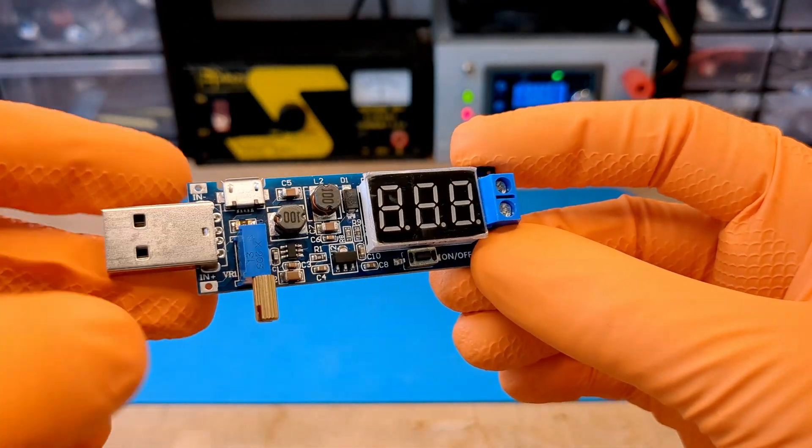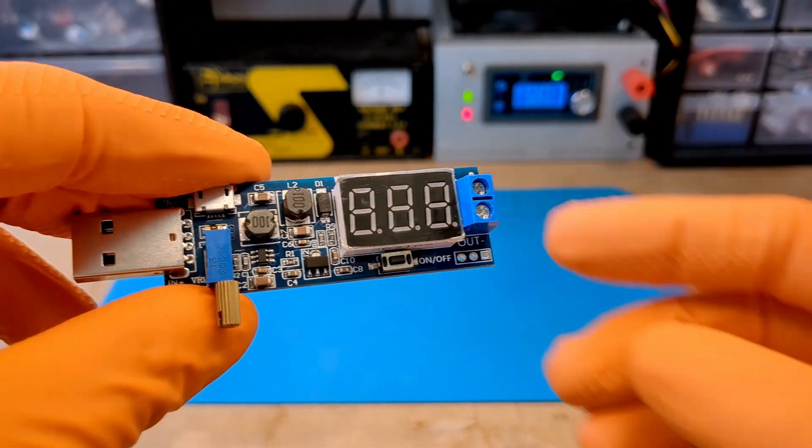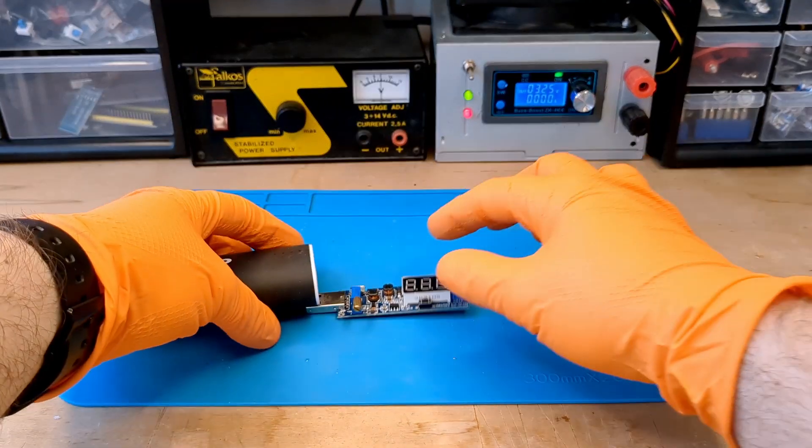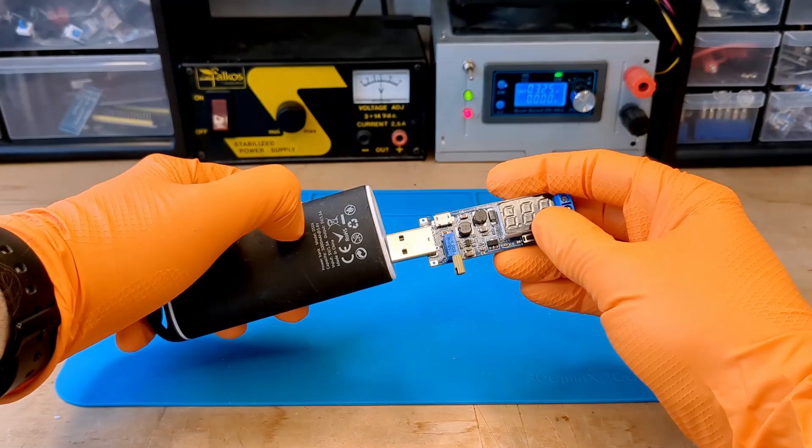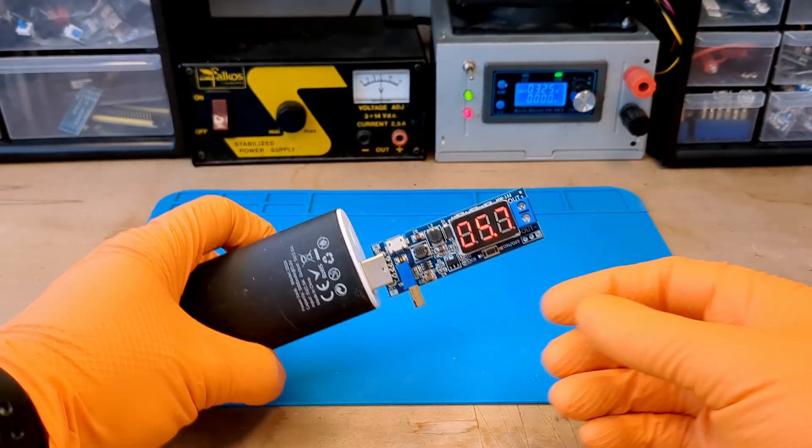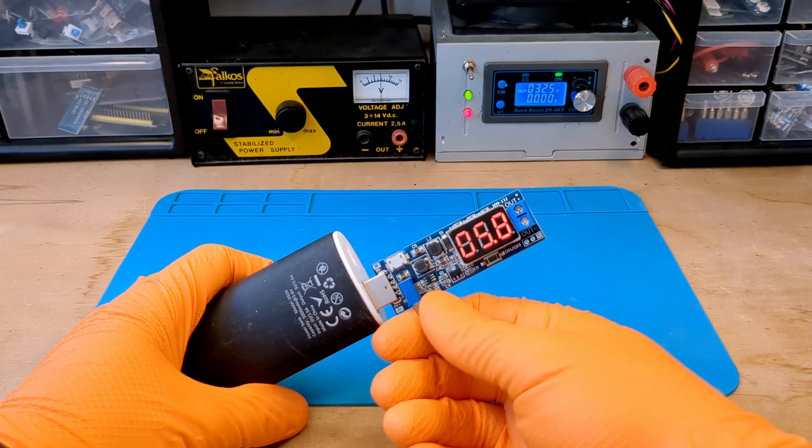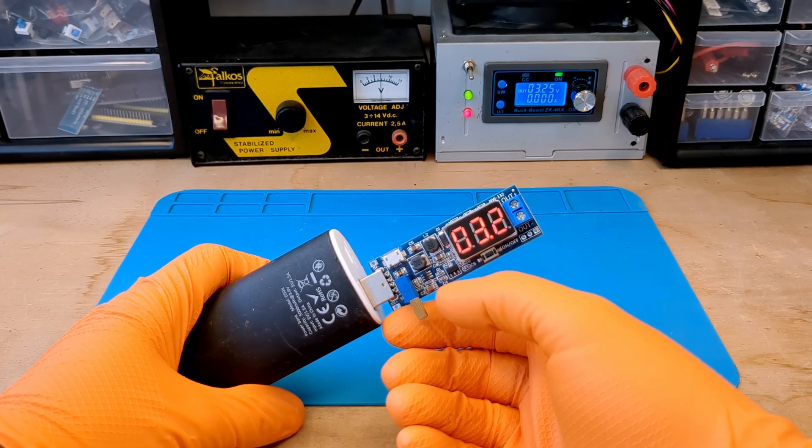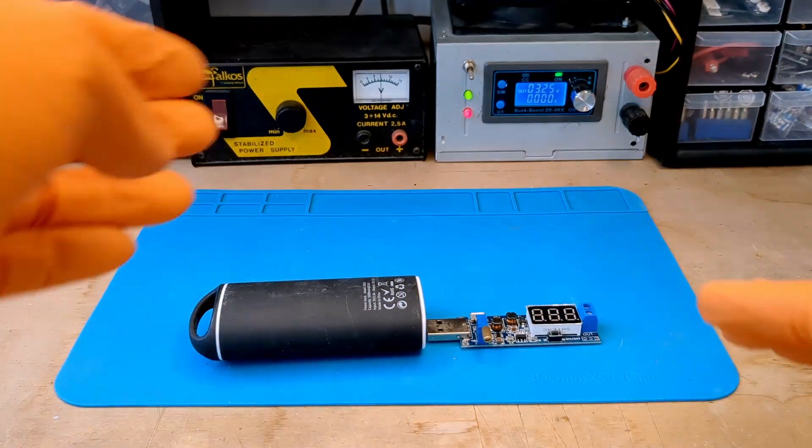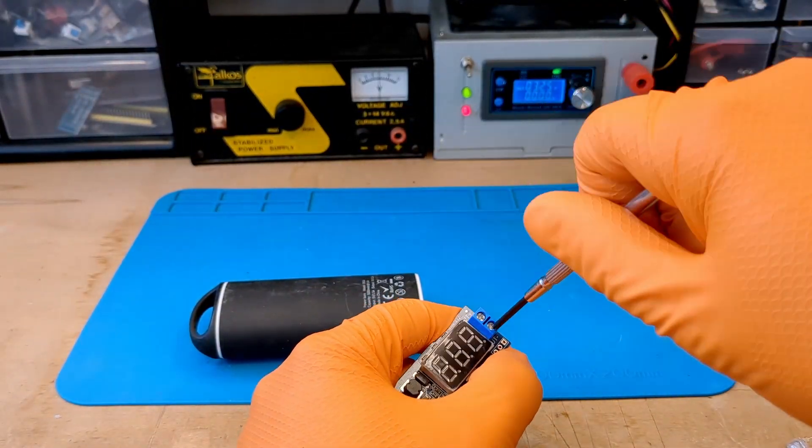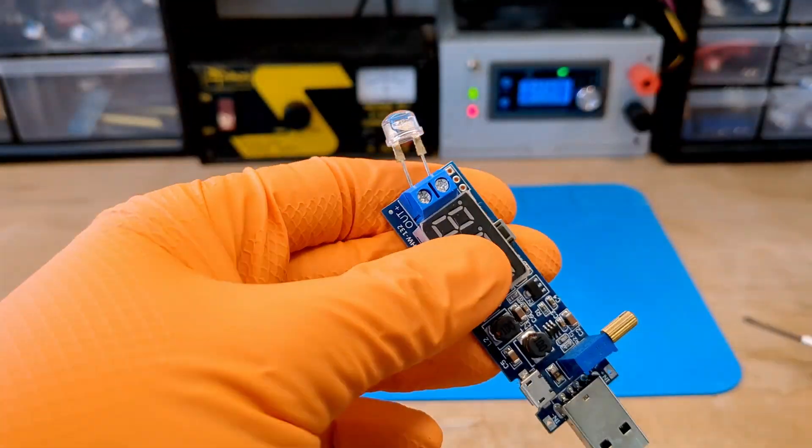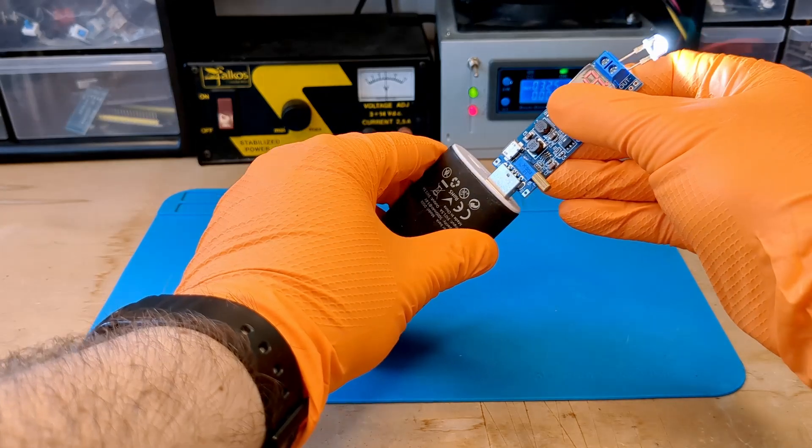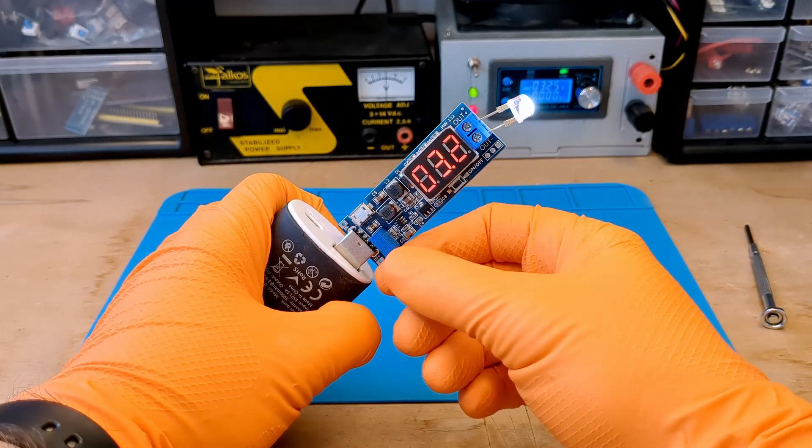It is nothing more than a compact DC-DC buck-boost converter powered by USB. Of course, we can also use it with a regular power bank. By turning the potentiometer we can adjust the output voltage from 1.2 to 24 volts. Unfortunately, this little power supply only delivers a maximum of 3 watts. This is not much, but it is enough to power a small project or a microcontroller with a sensor.